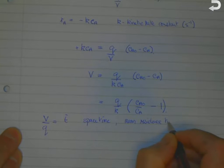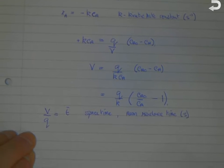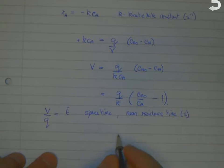This has units of time (seconds) and represents the time required to process one reactor volume of feed. It's a term widely used to characterize a CSTR.